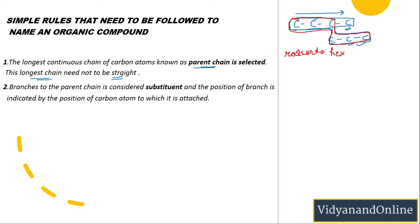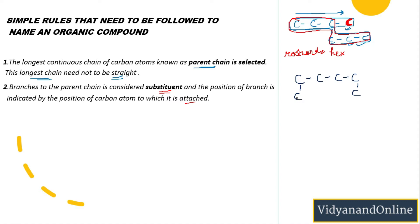The second rule: the branch attached to the parent chain is called the substituent. The position of the branch is indicated by the position of the carbon atom to which it is attached. One important thing — do not confuse the terminal carbons at the ends of the chain as branches. The branches will never be on the terminal ends of the chain.